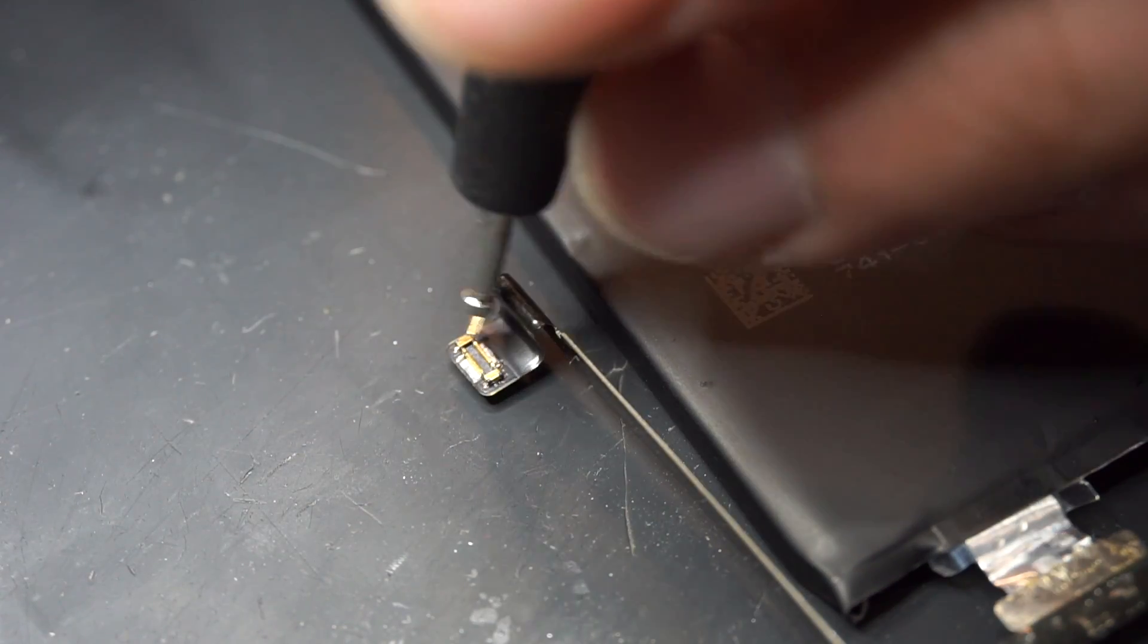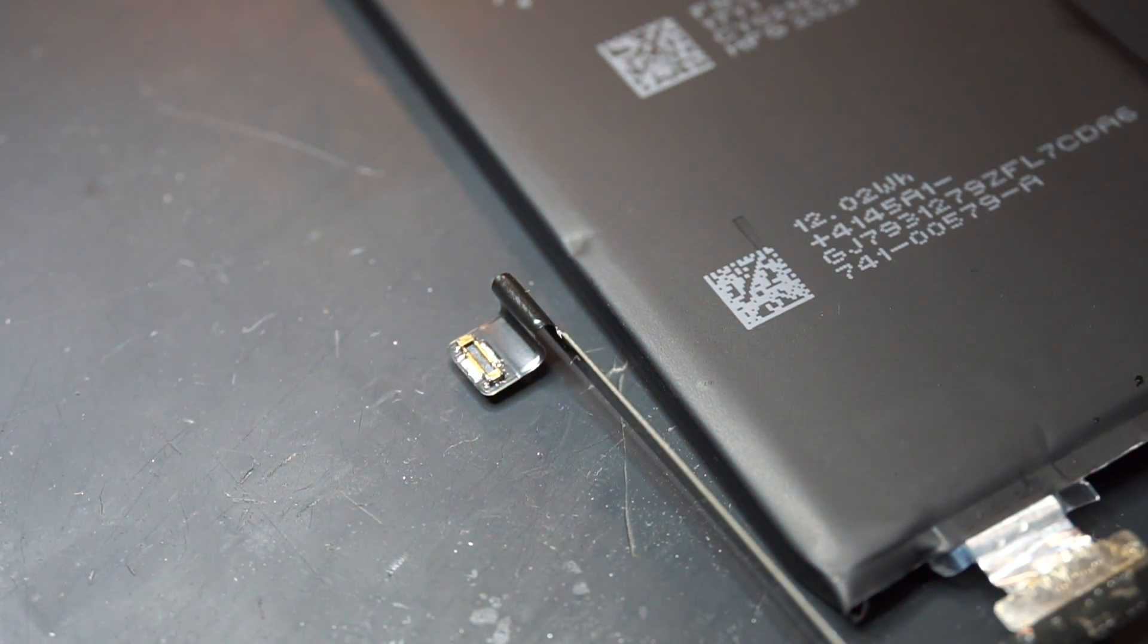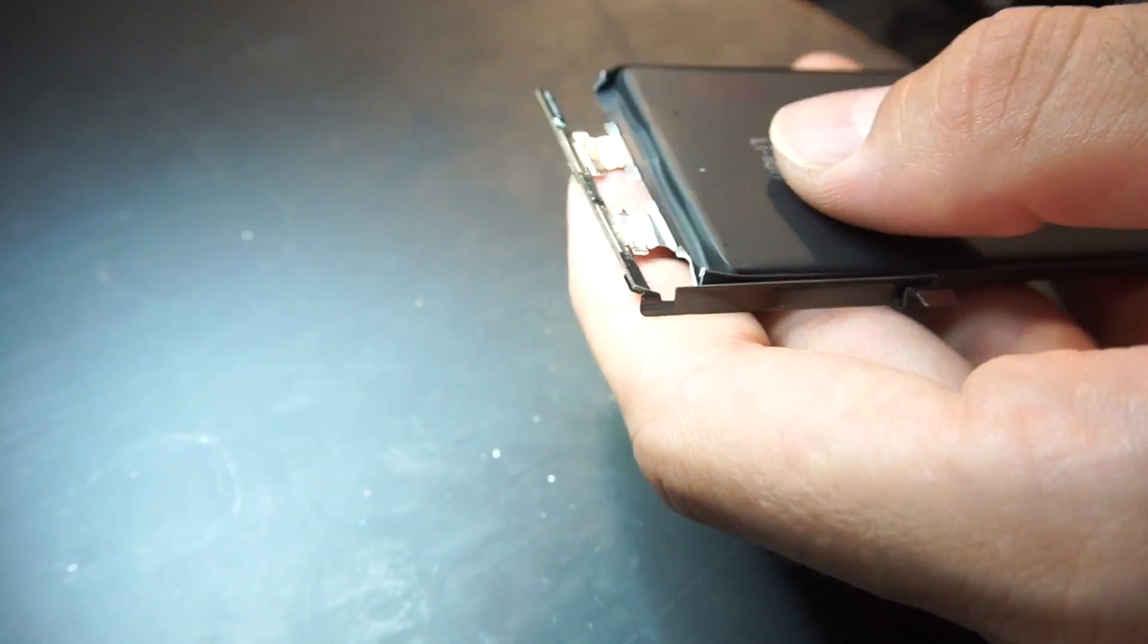Activate the BMS by injecting 4.2 volts on the battery connector. Now I can assemble the battery.